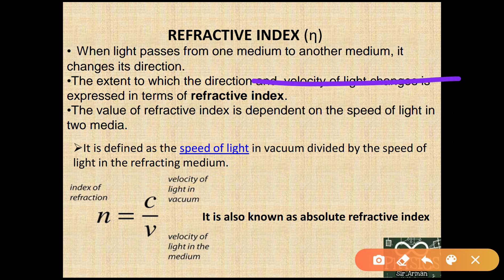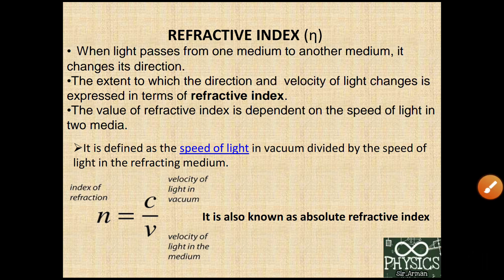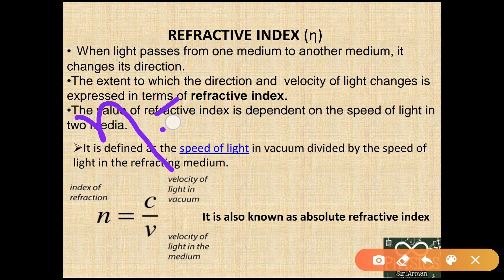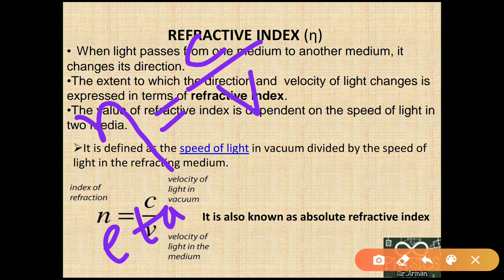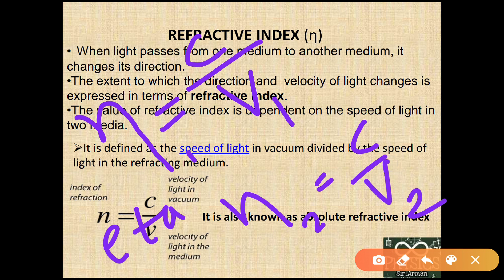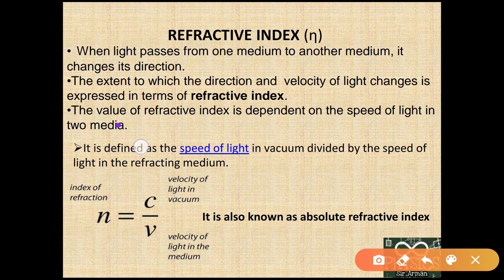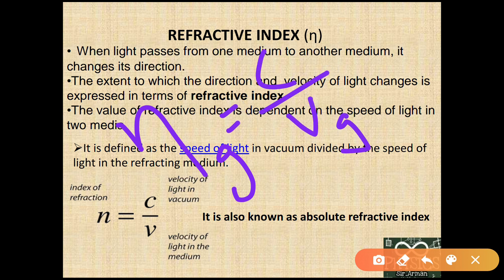This is denoted by η (eta), a Greek symbol. η equals c divided by v, where c is the speed of light in vacuum and v is the speed in the given medium. For medium 1, η₁ = c/v₁; for medium 2, η₂ = c/v₂. For example, the absolute refractive index of glass is η_g = c/v_g, where v_g is the velocity of light in glass.